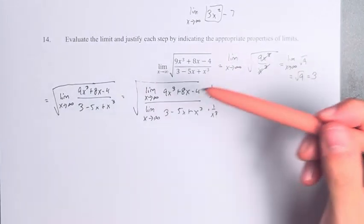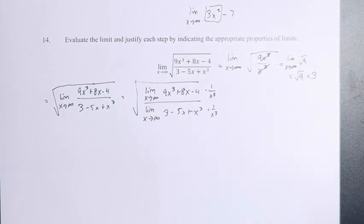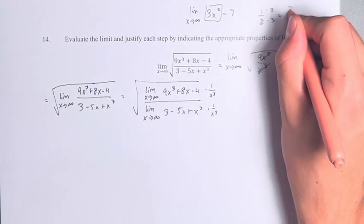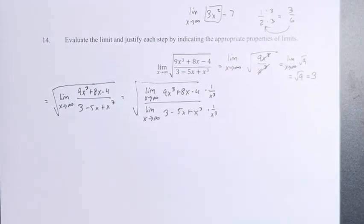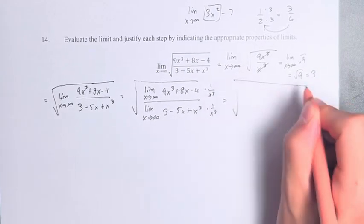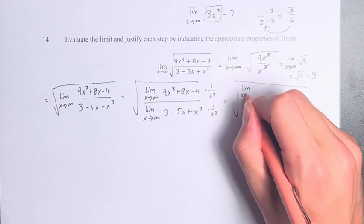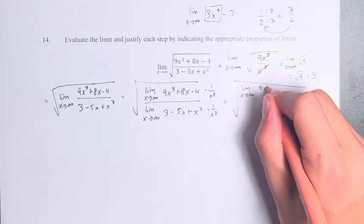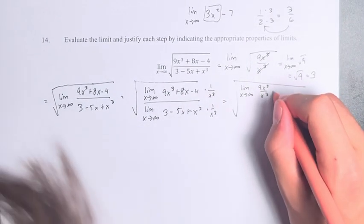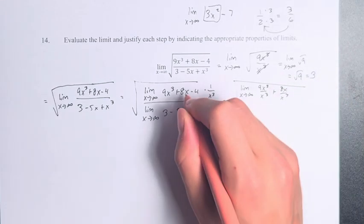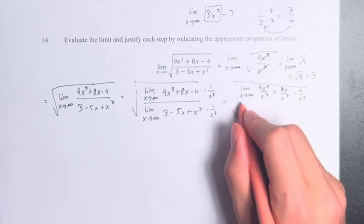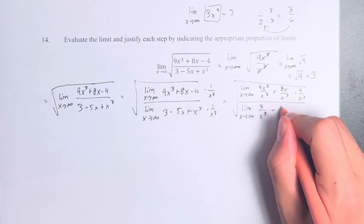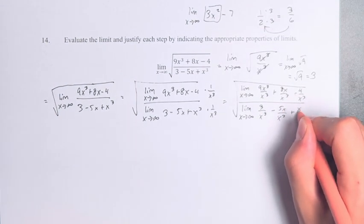We're able to do this because multiplying the numerator and denominator of a fraction by the same thing keeps it equivalent — just like multiplying 1/2 by 3/3 gives 3/6, the same value. This leaves us with the limit as x approaches infinity of 9x³/x³ plus 8x/x³ minus 4/x³, divided by the limit as x approaches infinity of 3/x³ minus 5x/x³ plus x³/x³.